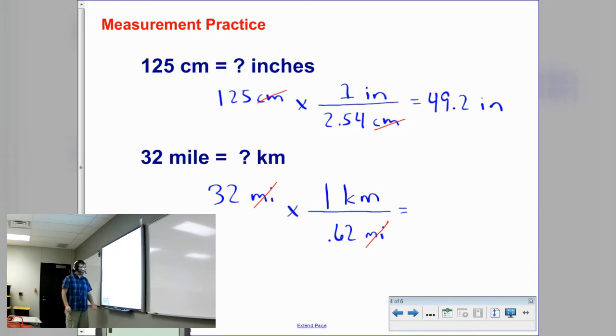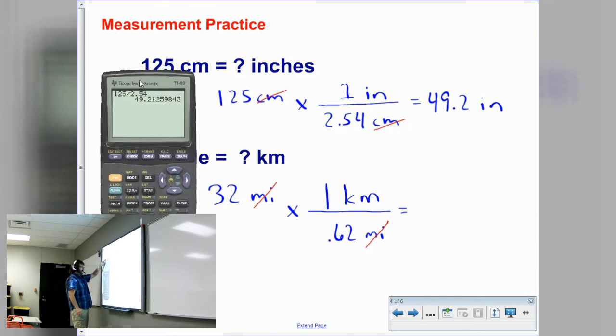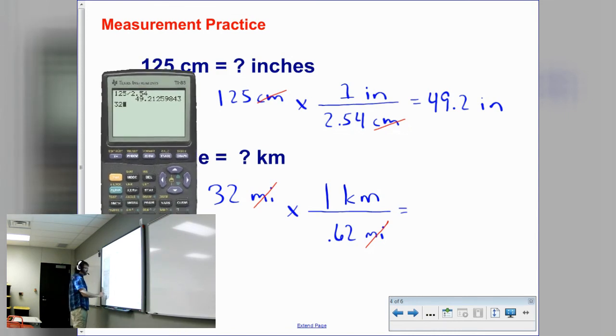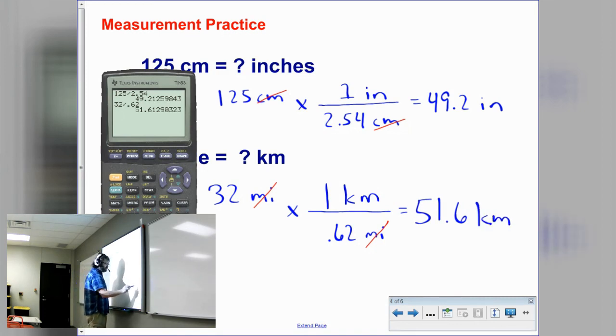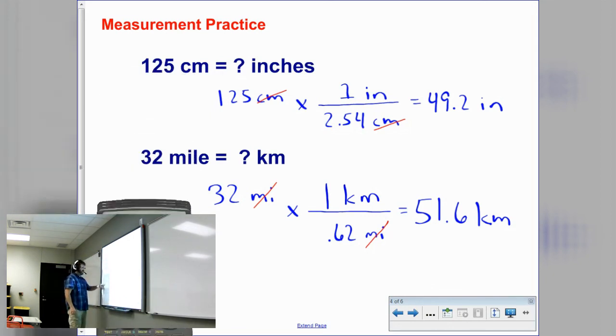Then we can solve our problem. I would type in 32 divided by 0.62. And I get 51.6 kilometers. So that's how to make these conversions with actual numbers.